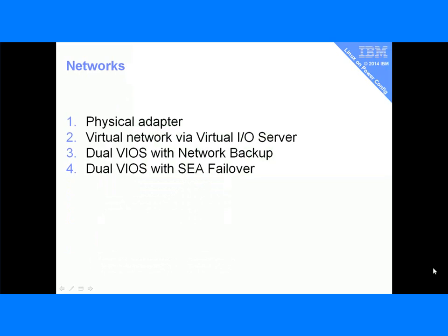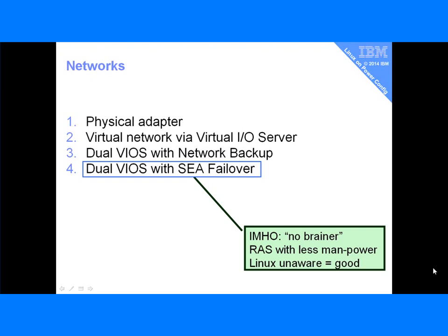On to networks. Physical adapter, we could do that via the VIO server. With dual VIO servers, there are two options for redundancy. There's network bonding — we present two different network connections over the two virtual I/O servers, and the operating system in the virtual machine handles those two and recovery if one fails. Or we can use SEA failover, where the VIO server caters to the fact that a network has failed, and the operating system in the virtual machine doesn't need to know. Obviously that last one is the better one — a bit of a no-brainer. It gives us reliability with less manpower for both AIX and Linux.